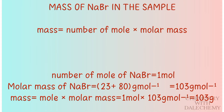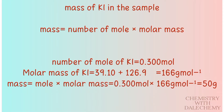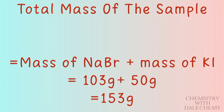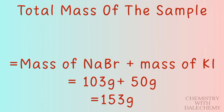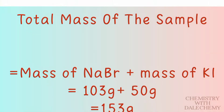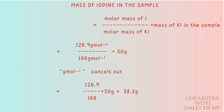The mass of potassium iodide in the sample is equal to its number of moles multiplied by its molar mass, which is 0.3 moles multiplied by 166 grams per mole to give 50 grams. The mass of iodine in the sample is equal to the molar mass of iodine divided by the molar mass of potassium iodide, multiplied by the mass of potassium iodide in the sample, which gives 8.2 grams.